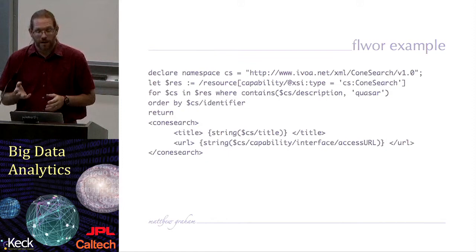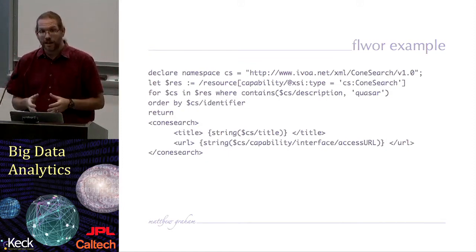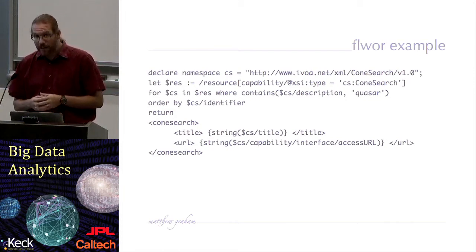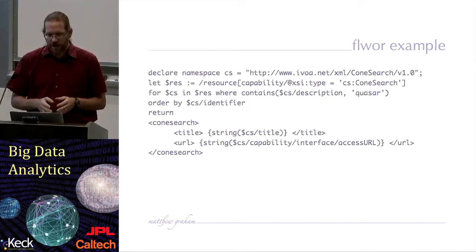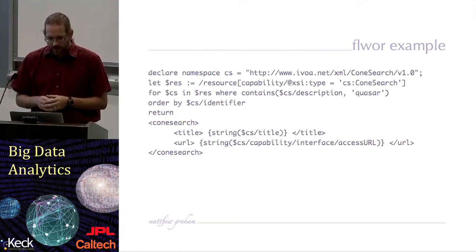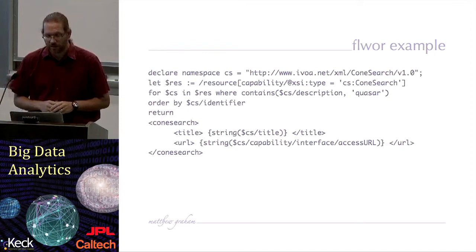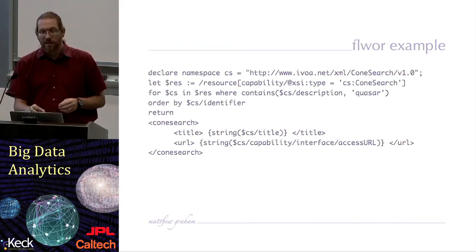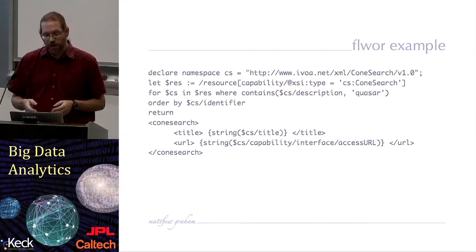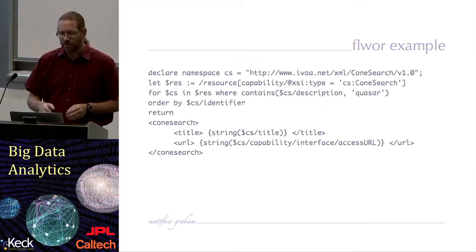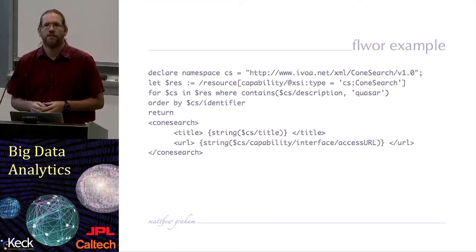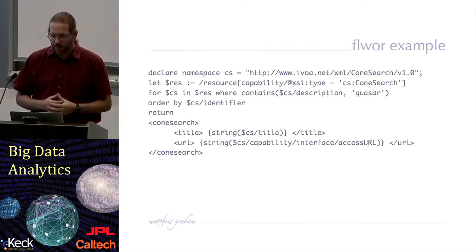This is an example of XQuery — equivalent to a select statement in SQL. This type of construction is called FLWOR. You can see that namespaces are defined, and then variables are assigned to the results of XPath statements pointing to particular elements within an XML document. There's a for loop with a where statement, and the predicate of that where statement is the same type of idea as a predicate in a SQL statement. There's an ordering, and then you return the result — one of the powers of XQuery is that you can format the returned result as a new XML structure.